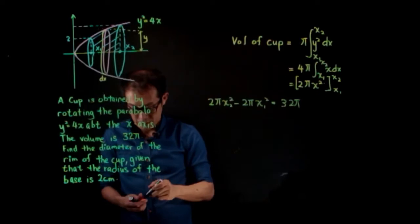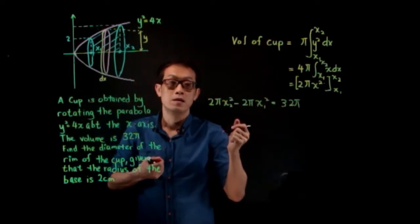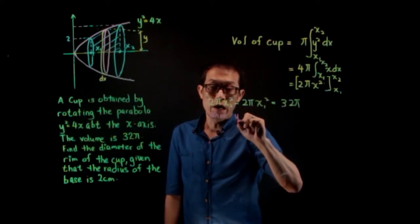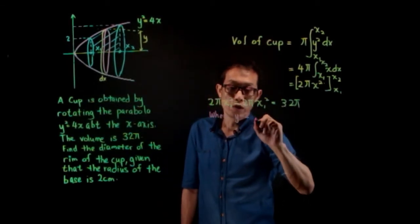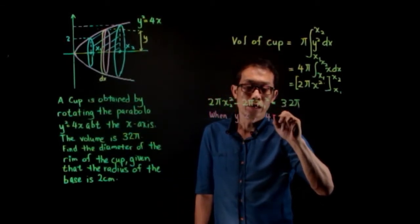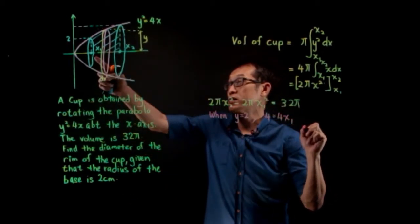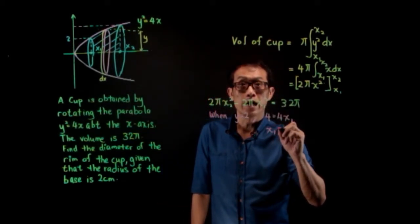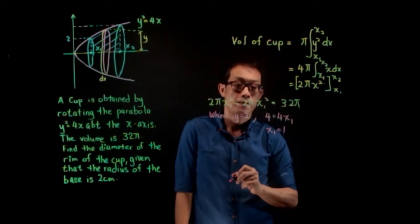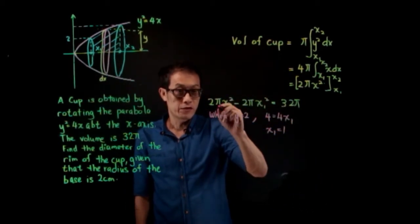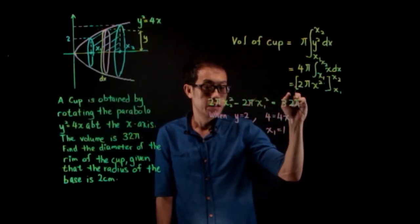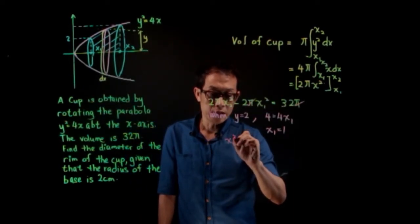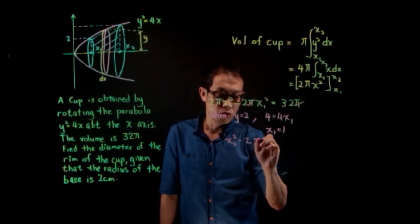Now, what is x1? When y = 2, we have 4 = 4x1, so x1 = 1. Cancel π from both sides. So we get x2² − 2(1²) = 32, which simplifies to x2² − 2 = 32.